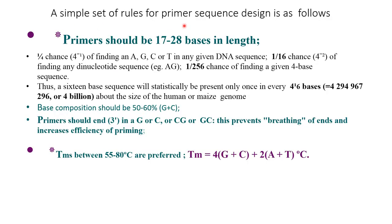Now what are the simple set of rules for primer designing? Primer sequence designing: one is that primer should be around 17 to 28 base pairs in length. There's one fourth chance of finding AGTC, the nucleotide in a given DNA sequence, or one by sixteenth chance of finding any dinucleotide sequence.